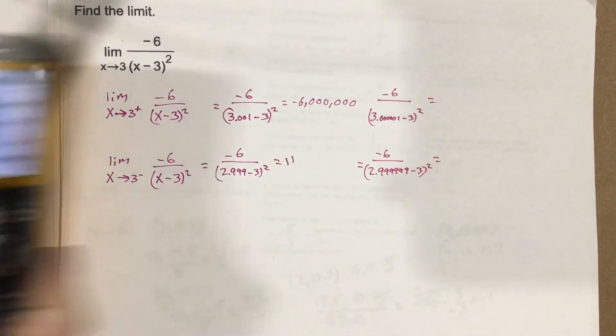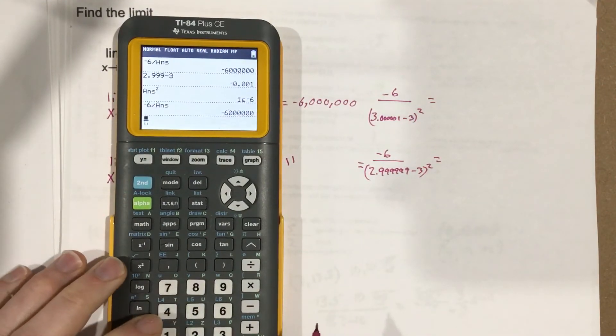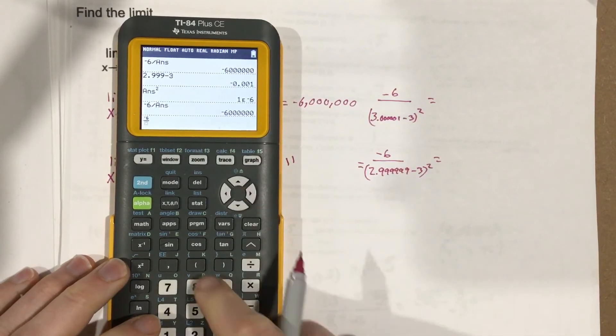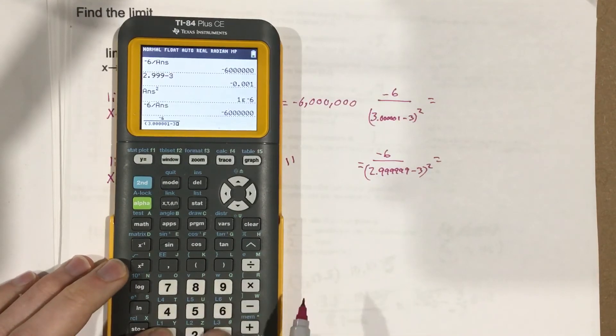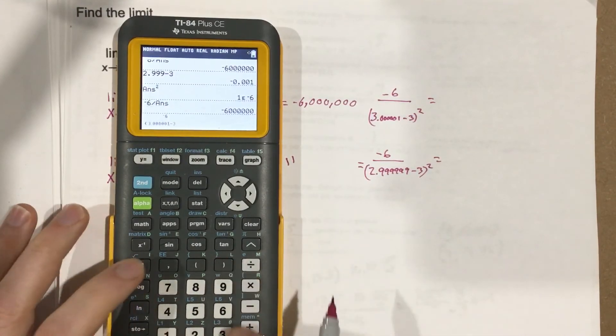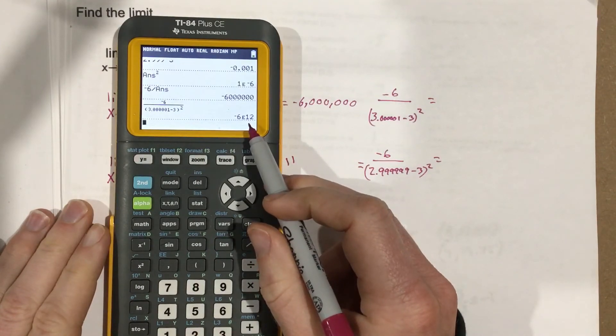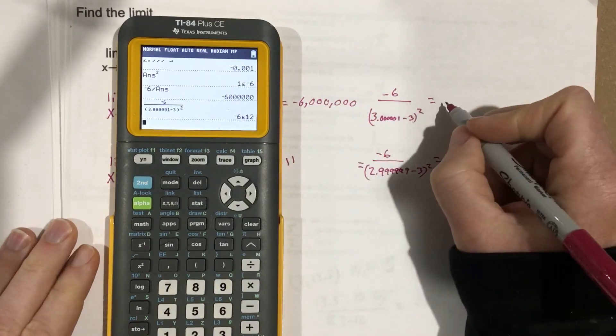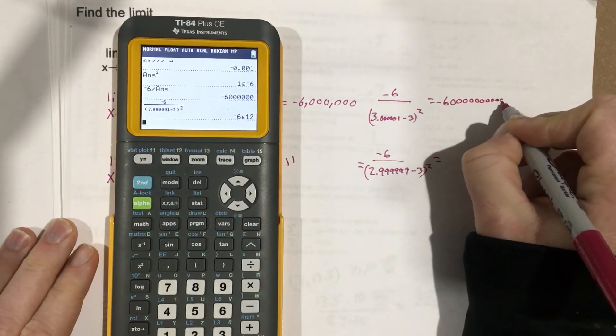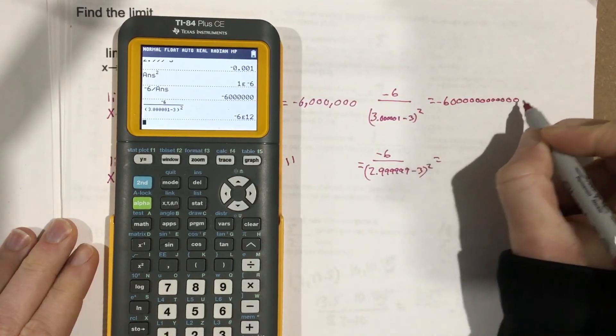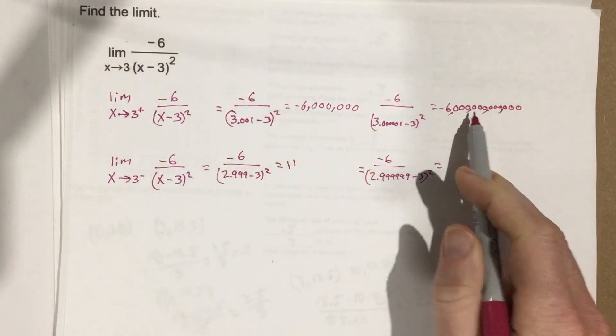When we plug that in, we get negative 6 divided by a very small number—look at that, negative 6.00 times 10 to the 12th power. Counting the decimal places: 1, 2, 3, 4, 5, 6, 7, 8, 9, 10, 11, 12. That's a pretty large number. Notice I'm getting larger and larger negatively.